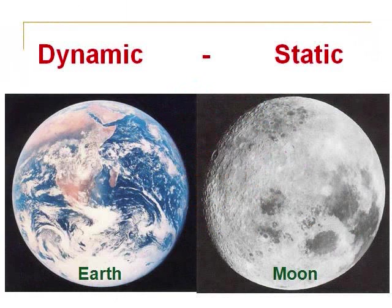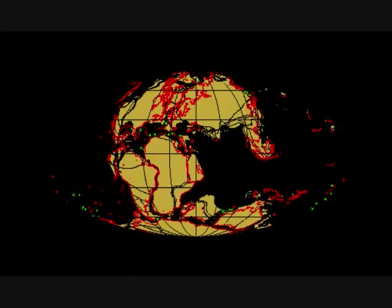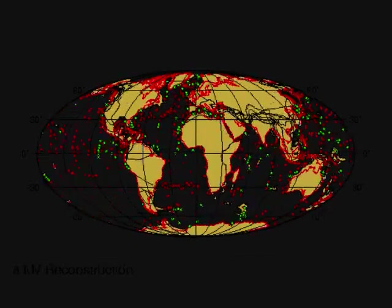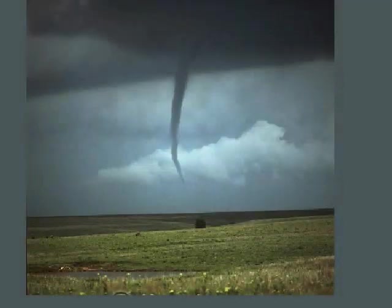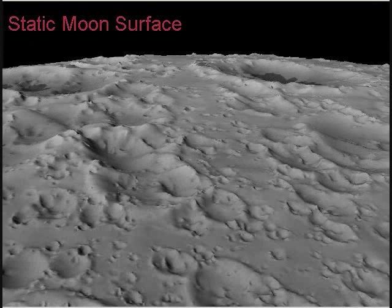The Earth is dynamic; the moon is static. When I say the Earth is dynamic, I mean that it changes. The plates and continents move. We have weather that can change from day to day, season to season, even from millennium to millennium. The opposite of dynamic is static — the moon does not change. There are no continents to move, weather to change, or particles to erode. Nothing on the moon changes except for a meteor hitting it every so often.